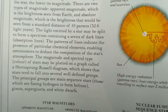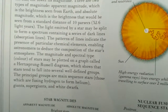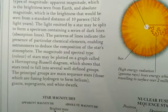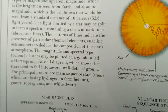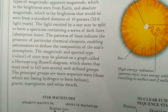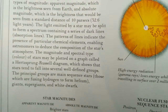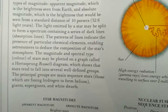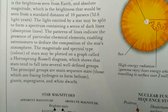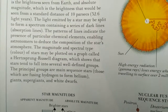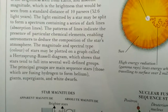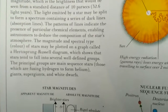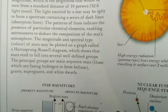The magnitude and spectral types of stars may be plotted on a graph called the Hertzsprung-Russell diagram, which shows that stars tend to fall into several well-defined groups: the principal group of main sequence stars, those which are fusing hydrogen to form helium, giants, supergiants, and white dwarfs.